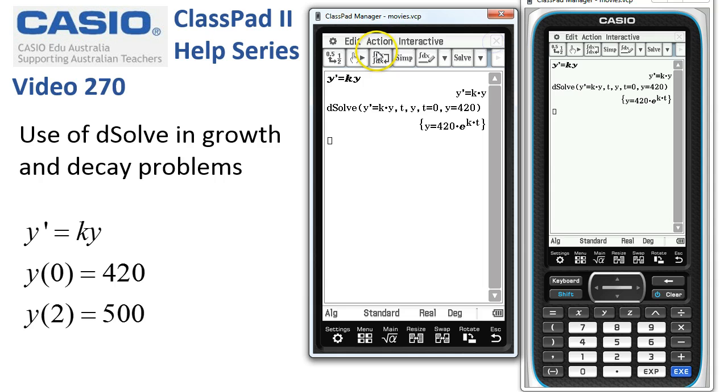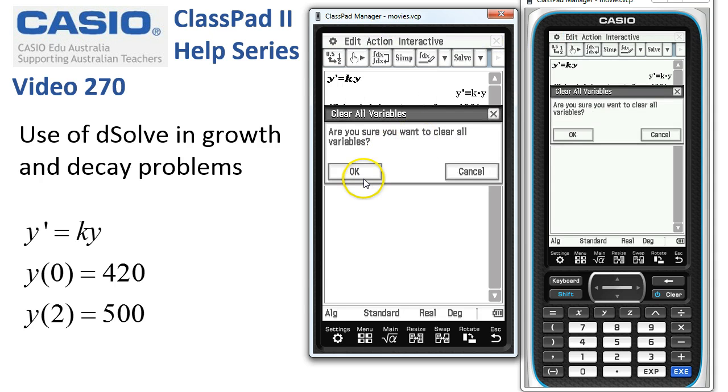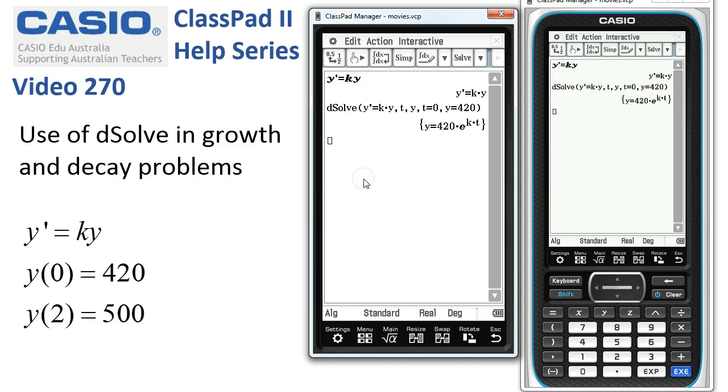When we're finished, let's close that. The best thing is to remember always clear all variables once you've been using that numsolve. That just means that values stored for y and k and t will now be cleared.